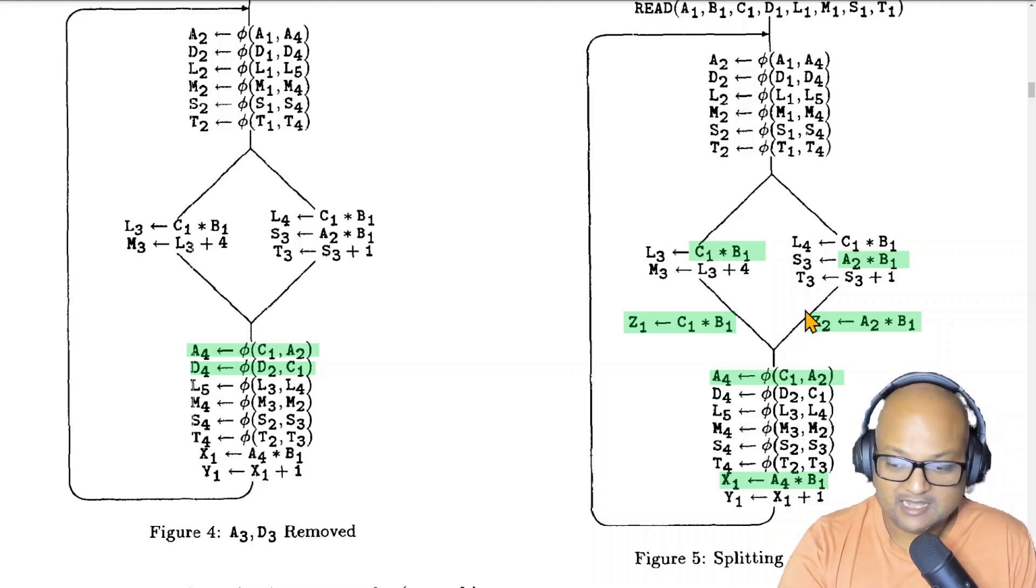We start by looking at the reverse topological sort of all the nodes or basic blocks in our representation. And in this case we will turn our attention to this assignment of x1 to a4 multiplied by b1 because it is the lowest ranked computation within the last node in topological sort order. And the way we try to identify redundant computations is by actually trying to push this computation back through the nodes in the program.